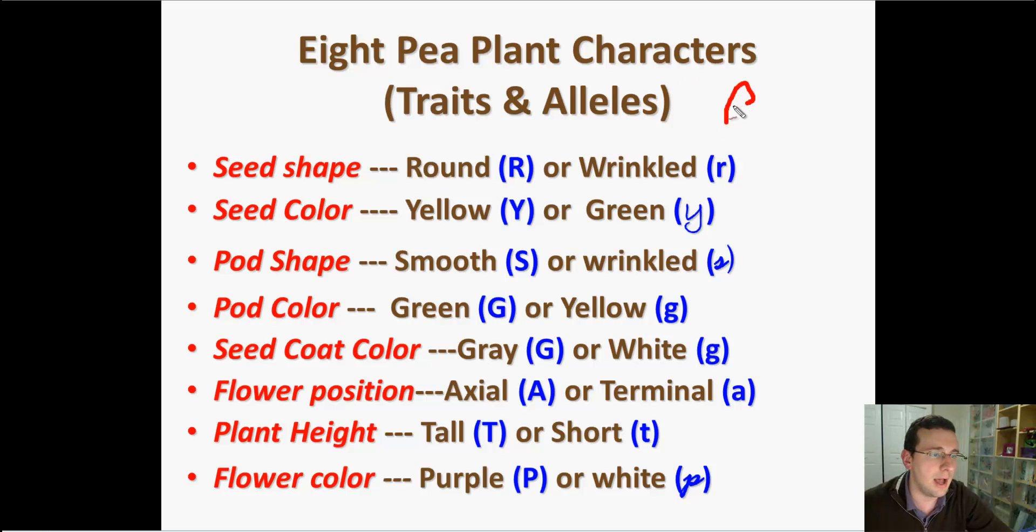So that means R is for round because round was discovered first. But what if wrinkled was discovered first? Then instead of using R, he would have used W.